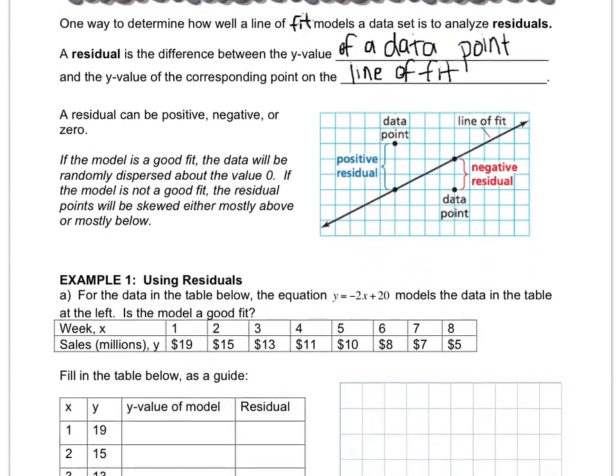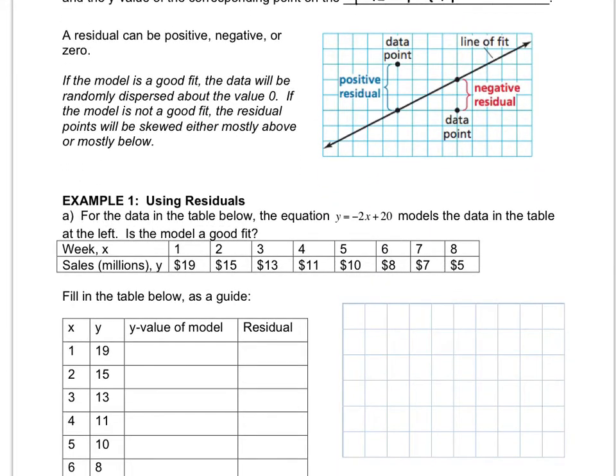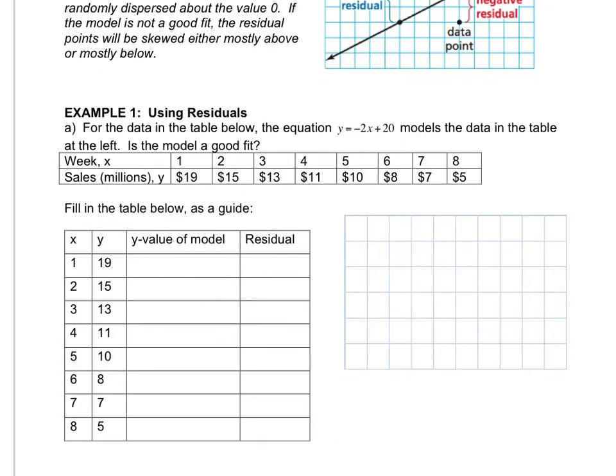In example one, we've got this set of points or set of data, and we are given this equation y = -2x + 20, and we want to know does that equation model the data very good or is there another line that would be better. I've set up the x-value and the y-value from the table in here, and then the next column says y-value of the model. Now remember the model is y = -2x + 20. What we want to do is we want to just calculate what would the y-value be if the x-value is given in the table.